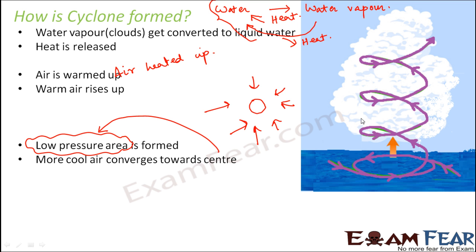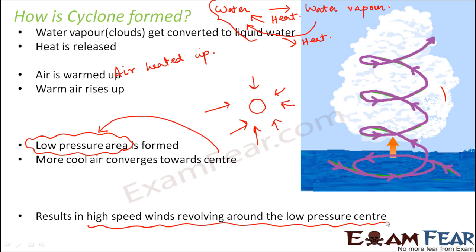Looking at it from the side gives one view, but from the top you can see there is a hollow center — that hollow is the low pressure area — and around it the winds are moving in a spiral, rotating fashion at very high speeds. The net result is that high-speed winds revolve around the low pressure center. During thunderstorms, if there is excessive rainfall, more water vapor converts to liquid water, more heat is released, more air warms up and rises, and a low pressure area is created — indicating the start of a cyclone.